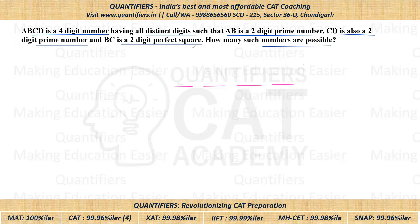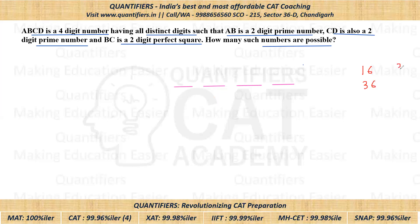Since AB is a two-digit prime number, it must be odd, so digit B has to be odd. Now I need to find two-digit perfect squares starting with an odd digit. The two-digit perfect squares are: 16, 25, 36, 49, 64, 81. Of these, only 16 and 36 start with an odd digit. So there are only two possible cases for BC: either 16 or 36.